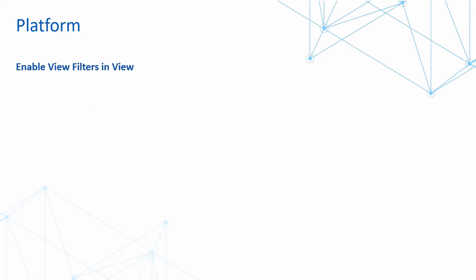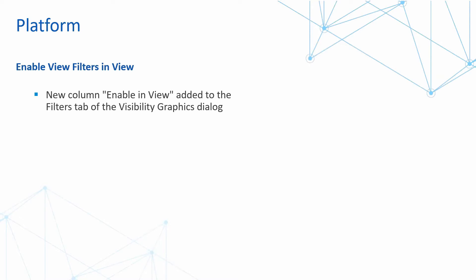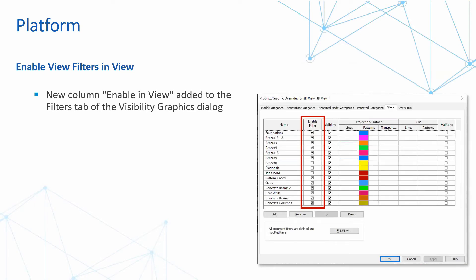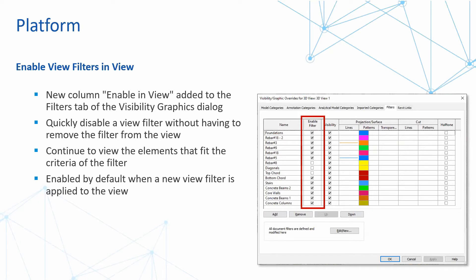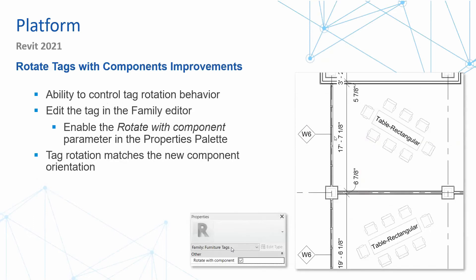We also have the ability to enable filters in a view. A new 'enable' column has been added to the filters tab on the visibility graphics dialog box, allowing you to quickly disable a view filter without having to remove it from the view entirely, while still being able to view elements that fit the criteria of the filter. This is enabled by default when a new view filter is applied. In Revit 2021 we also have the ability to rotate tags with their components — controlling tag and rotation behaviors — by editing tags in the family editor and enabling the 'rotate with component' parameter in the properties palette. Please keep in mind that this ability must be activated within the family editor.